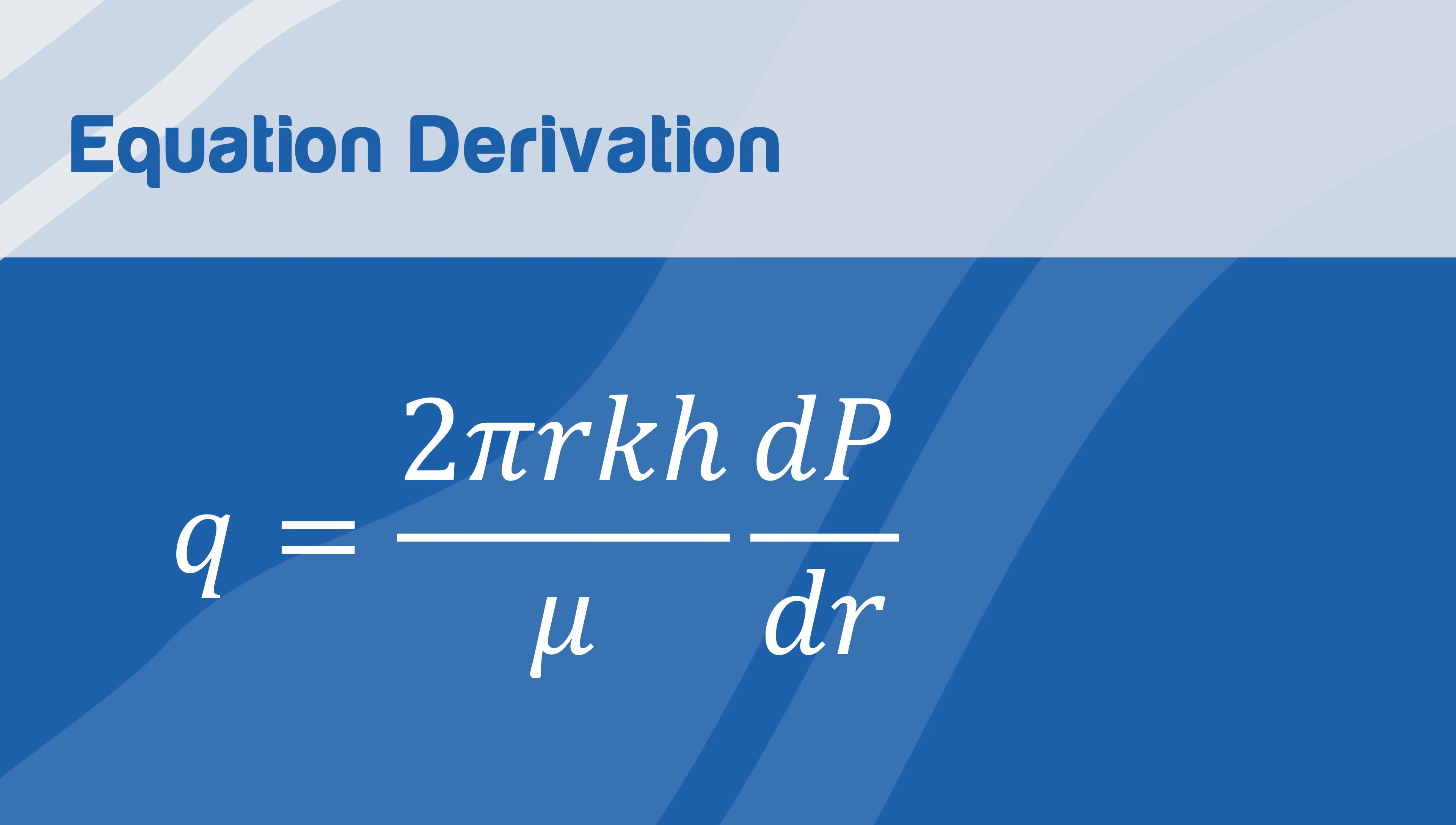We start with the differential form of Darcy's law, and substitute the area perpendicular to flow, which is the circumference of the cylinder, and change the coordinates from linear to radial. The equation becomes q equals 2πrkh over μ dp over dr.